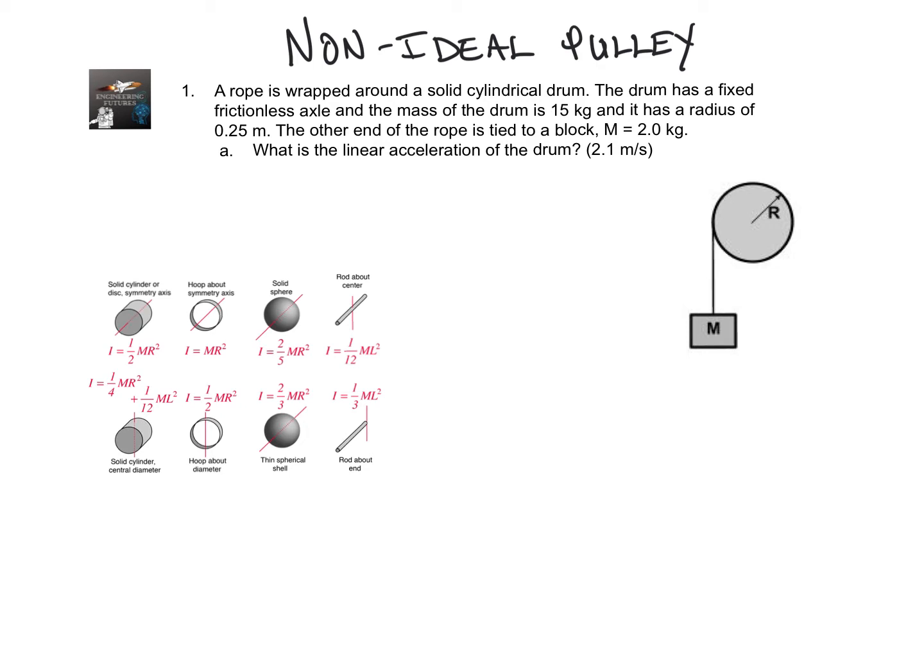So what non-ideal means is when you have a pulley but there is friction involved and the pulley has mass so that means the object has some moment of inertia so we have to account for that. Most problems in general physics we can negate this but this is more of an AP style problem. So what happens when you cannot negate friction and you don't have this perfect pulley system?